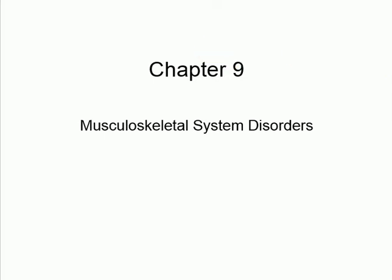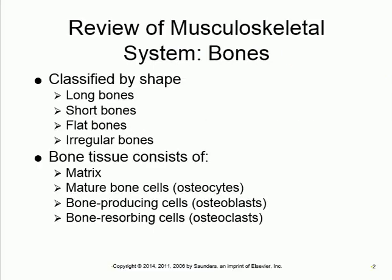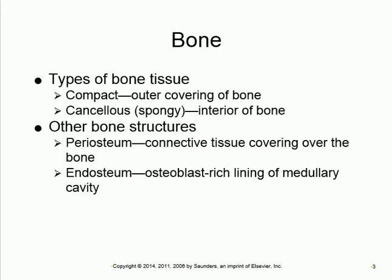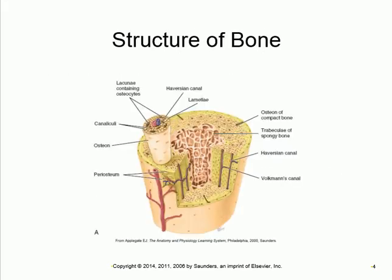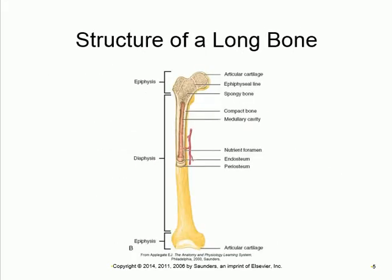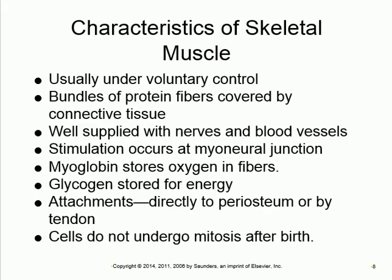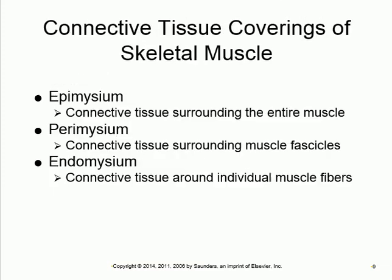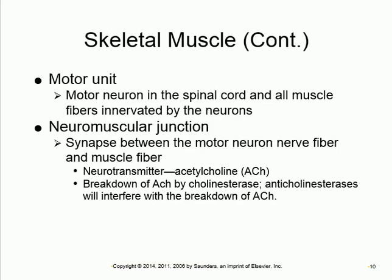Chapter 9: Musculoskeletal Disorders. The first part covers normal anatomy that we did in AP1 or AP2, so these are all the basics and I'm not going to focus much on it. You can review it anytime.